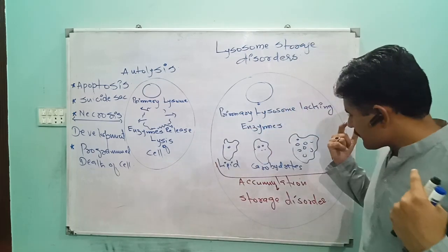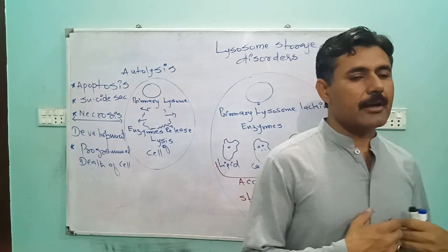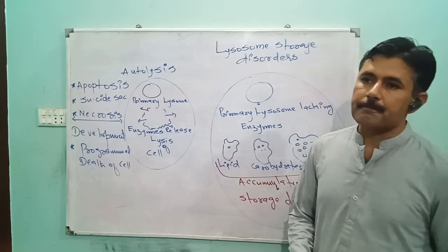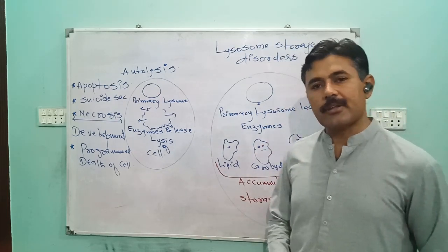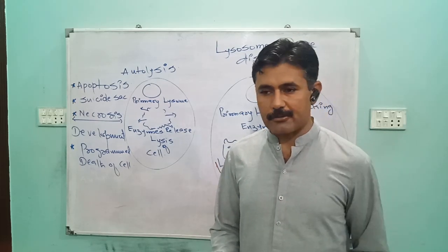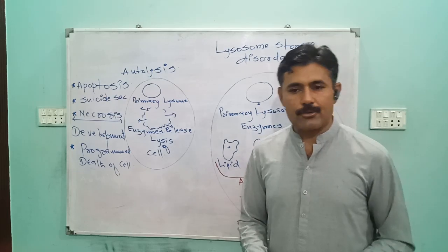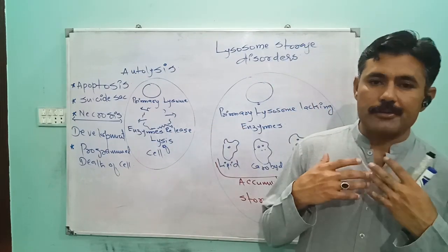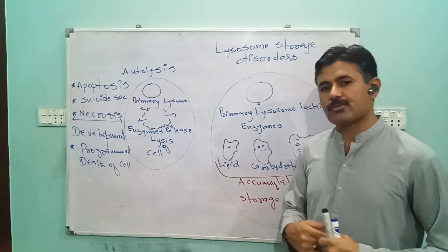This storage can take place in any organ of the body — it can take place in the spleen, the brain, or any other organ. In every organ where accumulation is taking place, that organ becomes defective and fails to perform its function. Lysosomal storage disorders can affect our liver, spleen, and brain, resulting in major diseases.